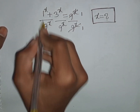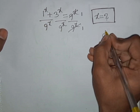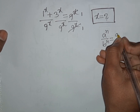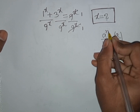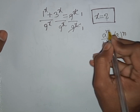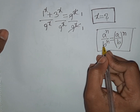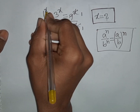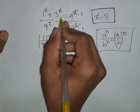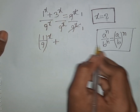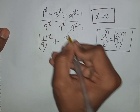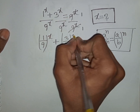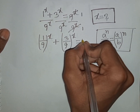We see the same power but different base. According to the formula a^n · b^n = (a·b)^n — same power but different base — we can write (1/9)^x plus, and again same power different base, so we write (3/9)^x is equal to 1.